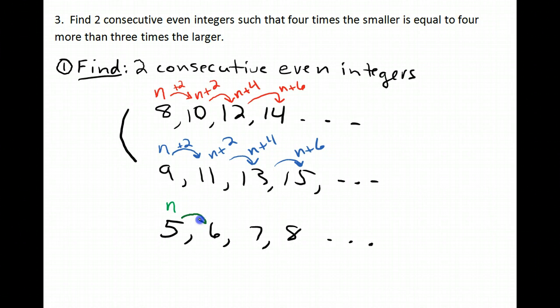And now, simply for consecutive integers, here we're just adding 1. So this one is n plus 1. And if I add 1 again, I'm at n plus 2, add 1 again, I'm at n plus 3, and so forth.